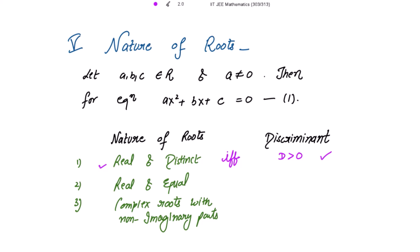The roots are real and equal if and only if the discriminant is equal to zero. The roots are complex with non-zero imaginary parts if and only if the discriminant is strictly negative.